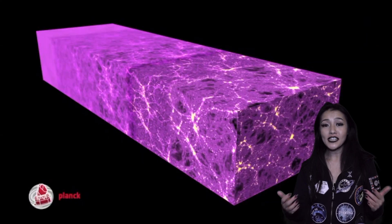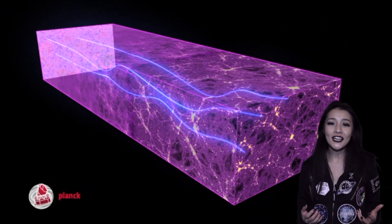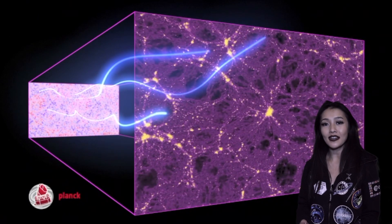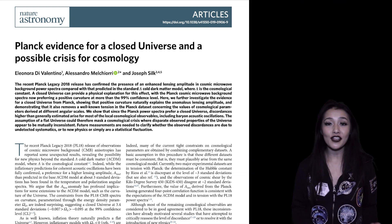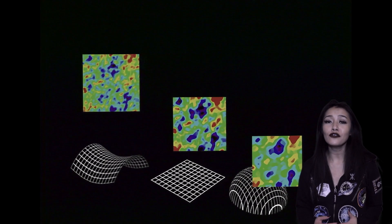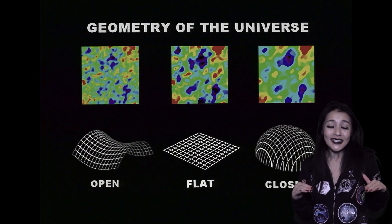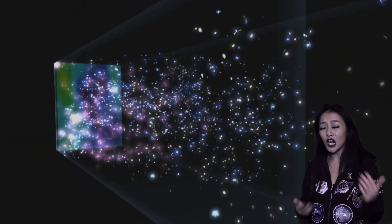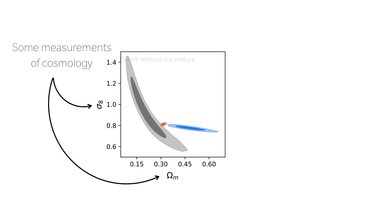As the CMB radiation travels to us today, it's gravitationally lensed by any intervening matter — its intensity is distorted by the gravity of that matter. A recent study using the Planck satellite showed that the amount of gravitational lensing of the CMB is much larger than what we expected, and this could be explained if the universe is curved rather than flat, since the radiation could make multiple trips around the universe and lens it even more. But there's a new problem with Planck: it has several disagreements with other observational methods, and having a closed universe only increases that difference.